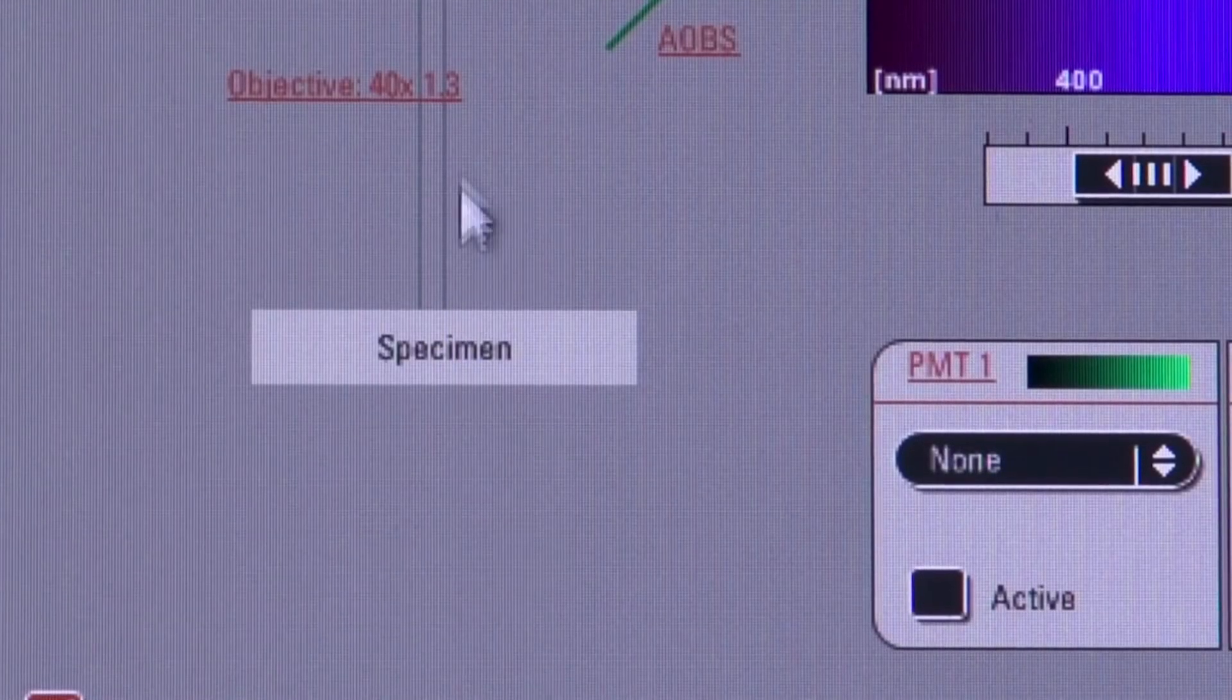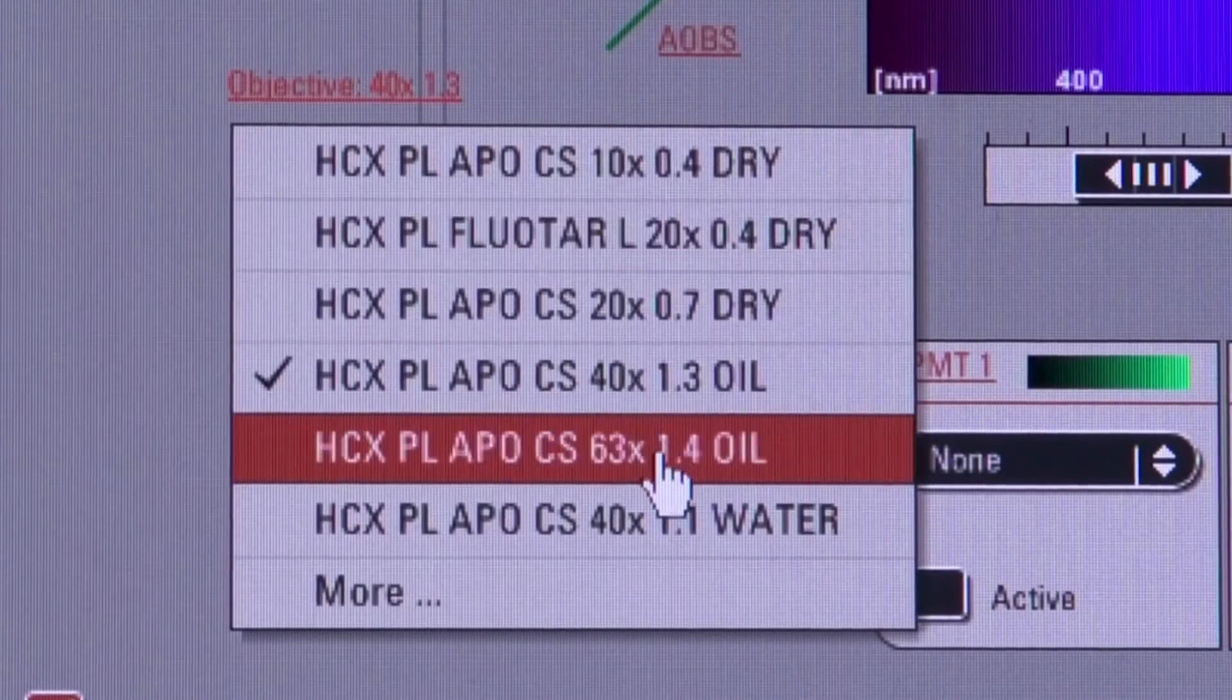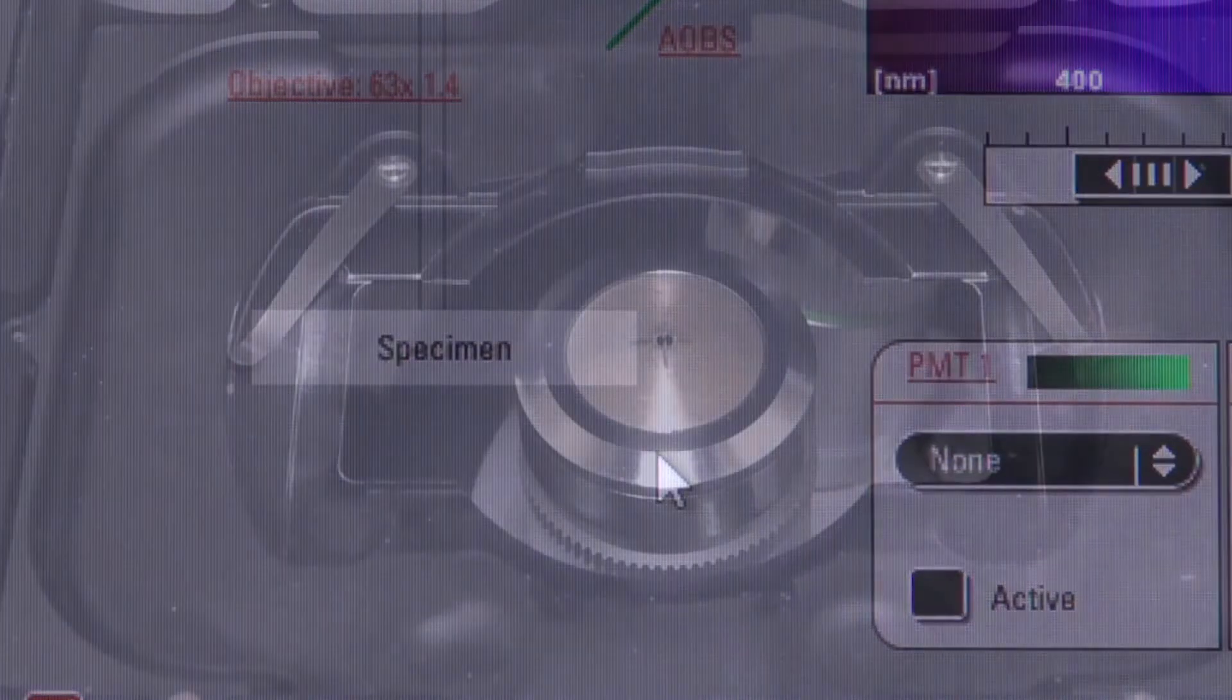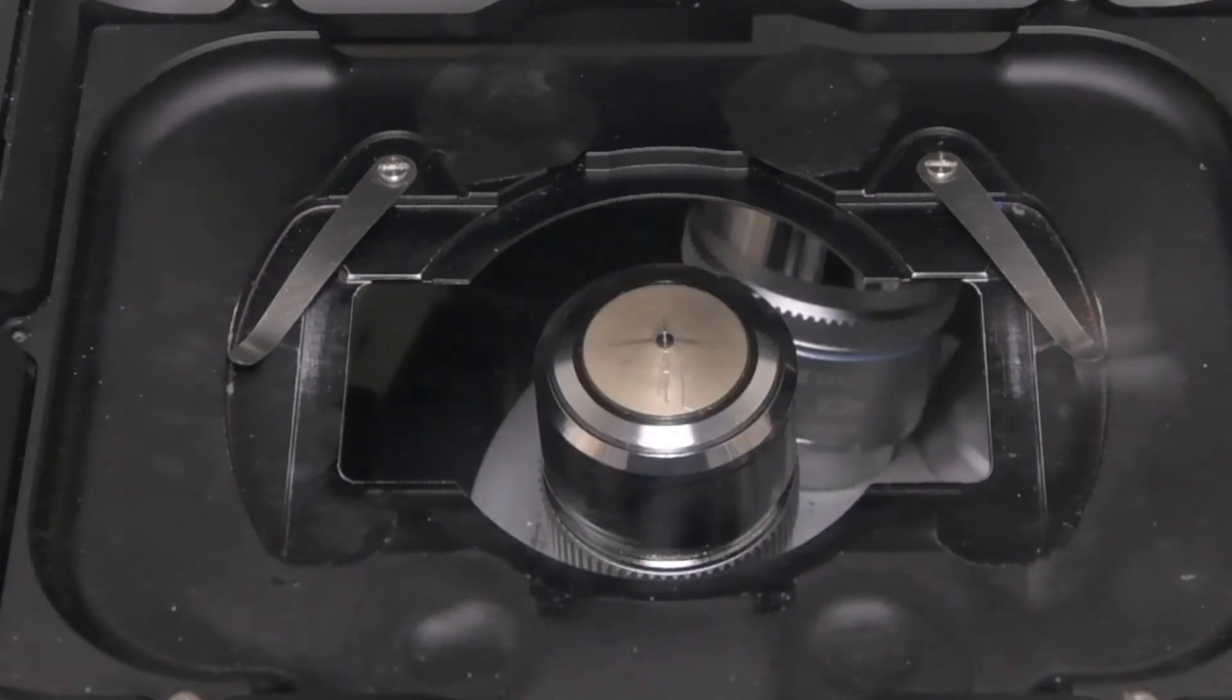So back to the task at hand. We want the 63X, so let's click on that and see what it looks like in the scope. Here is the 63X objective in place. It looks a lot like the 40X, but it's a little thinner.